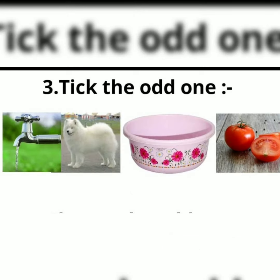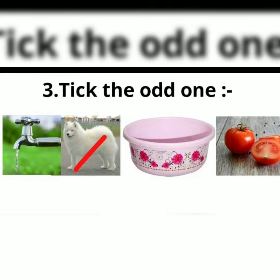Third, tick the odd one out. We have T for tap, D for dog, T for tub, T for tomato. D for dog is the odd one out.